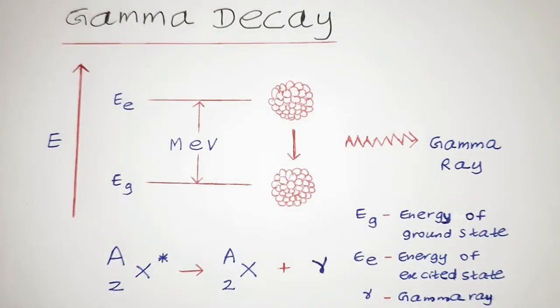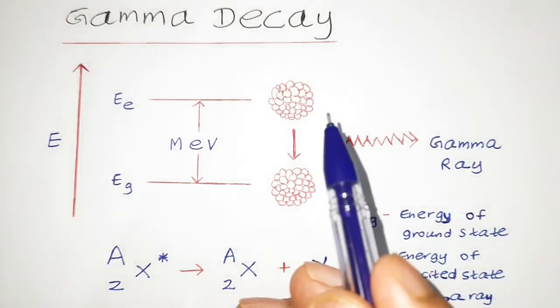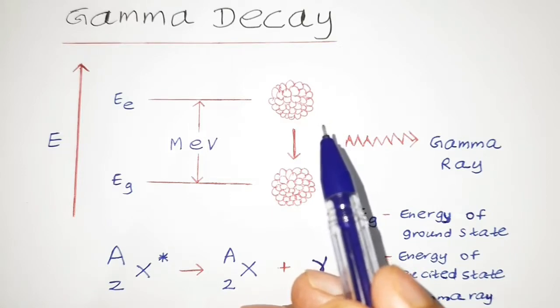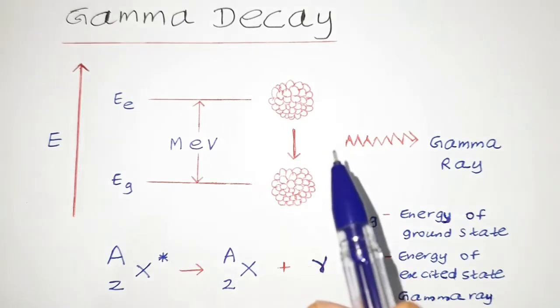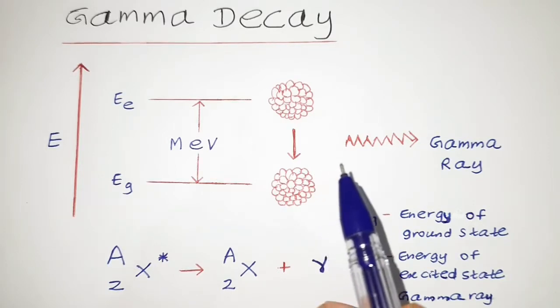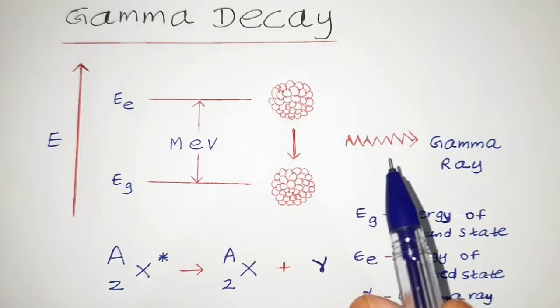In the same way, nucleons exist in energy levels and nuclear transition in energy levels is also possible. If you have an excited nucleus where the nucleons aren't in its ground state but they are in the excited state, and that nucleon jumps from a higher energy level to a lower energy level, the excess amount of energy corresponding to the difference in the energy of the energy levels is emitted in the form of a photon.